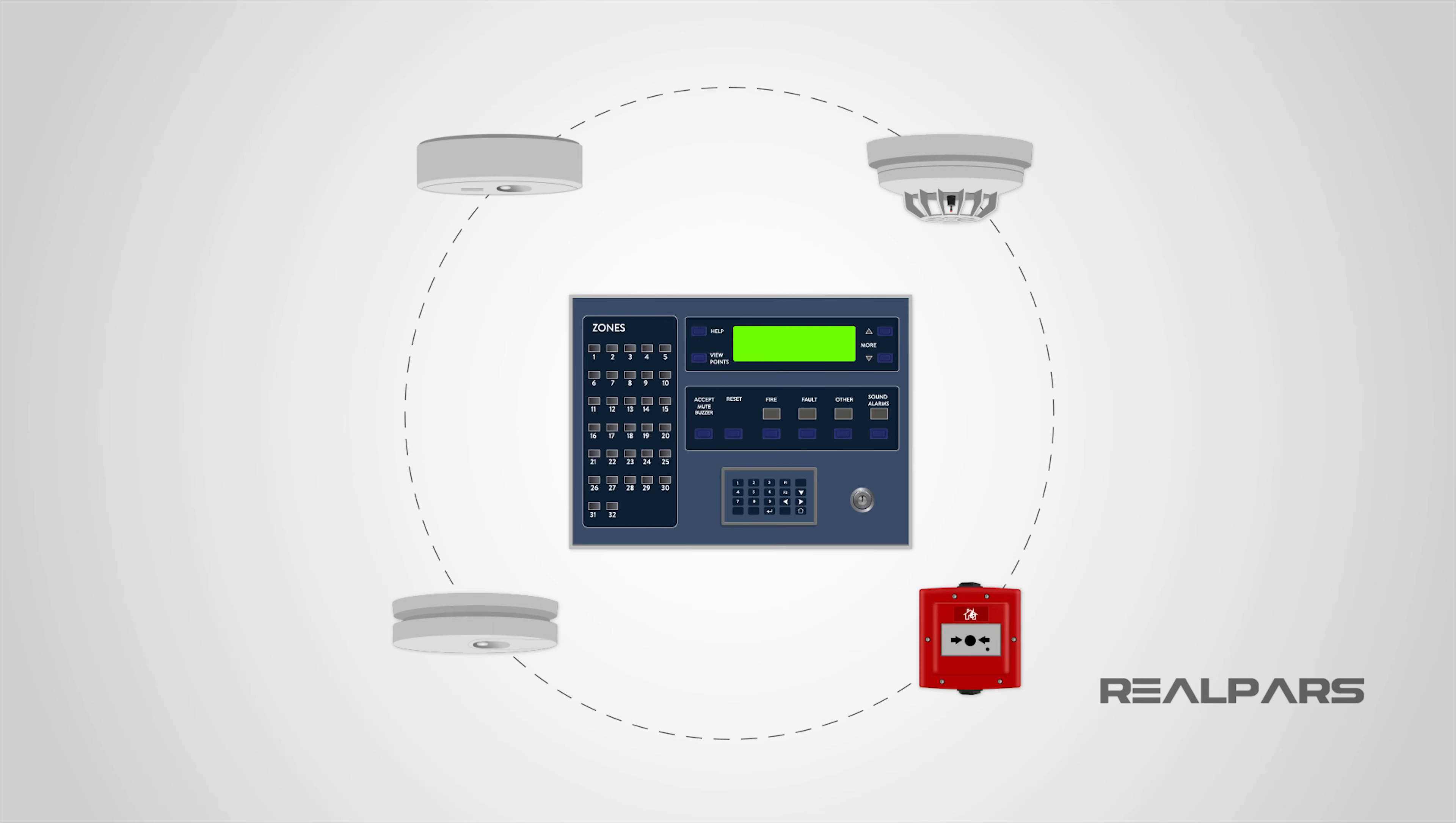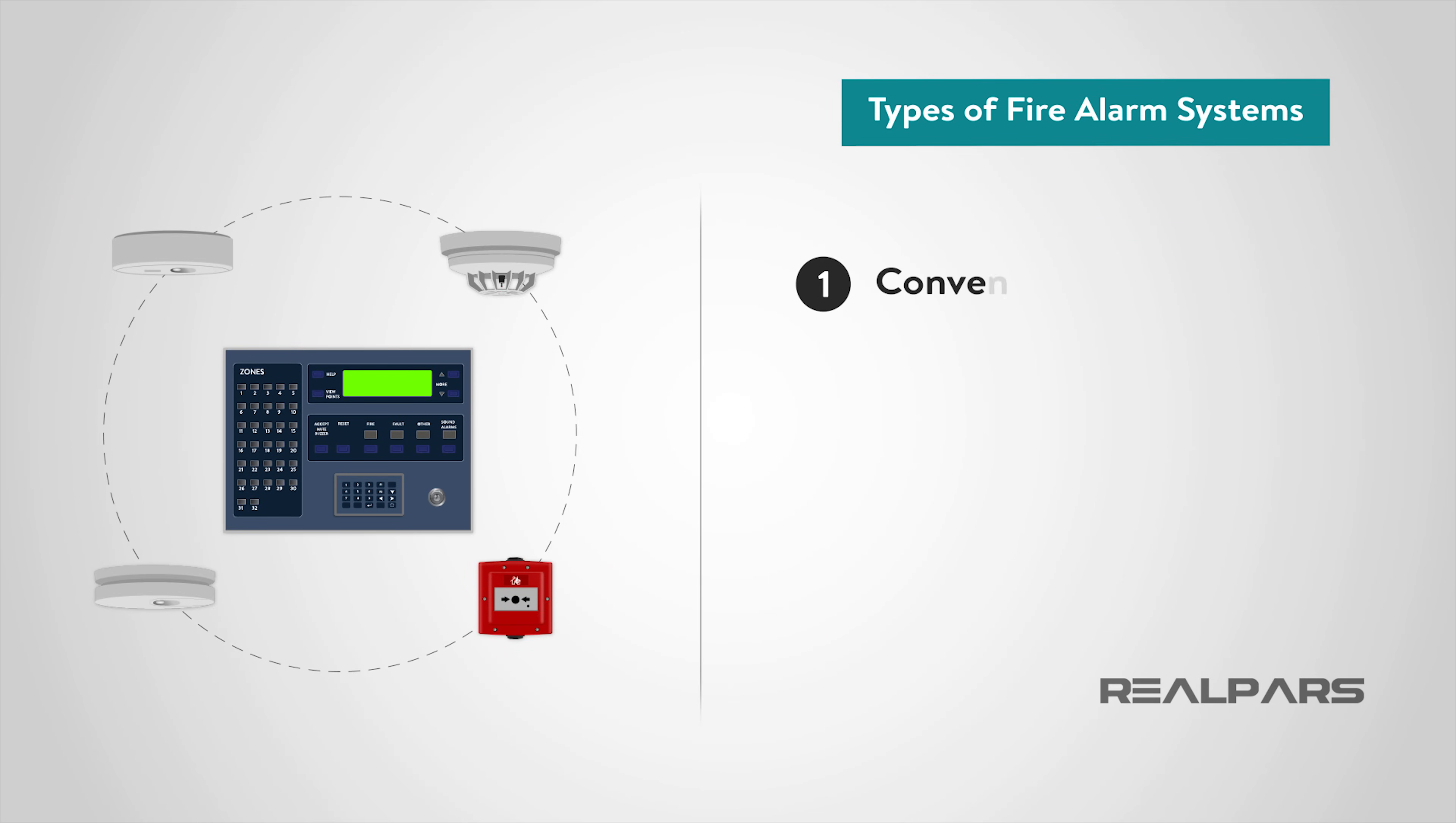Fire alarm systems can be broken down into four main types: conventional, addressable, intelligent fire systems, and wireless systems. Let's spend some time considering each.